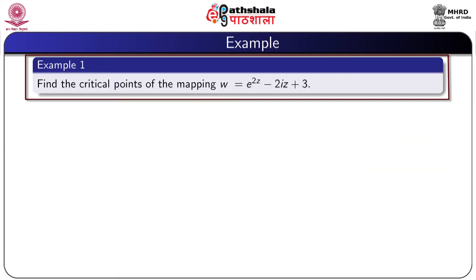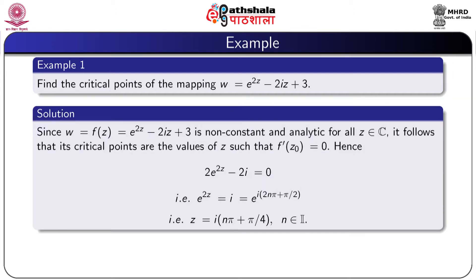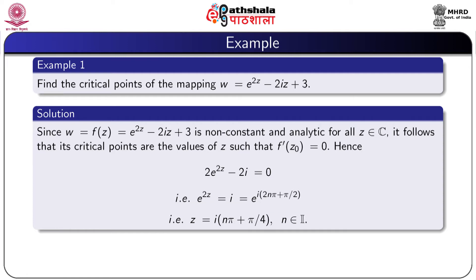Consider the example: find the critical points of the mapping w = e^(2z) − 2iz + 3. Since w = f(z) = e^(2z) − 2iz + 3 is non-constant and analytic for all z in the complex plane, its critical points are the values of z for which f'(z) = 0. Therefore 2e^(2z) − 2i = 0, giving e^(2z) = i = e^(i(2nπ + π/2)). This gives z = i(nπ + π/4) where n belongs to the set of all integers.